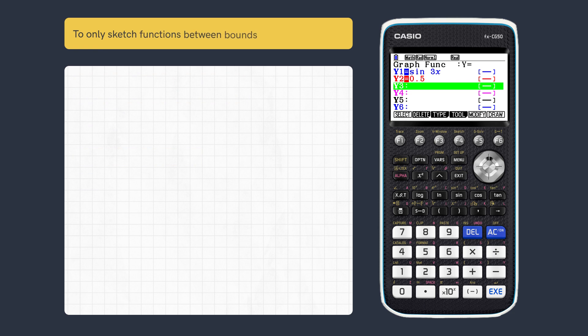We can now edit the functions to include bounds. The solutions to this equation are in the given interval. To only sketch the correct intersections,